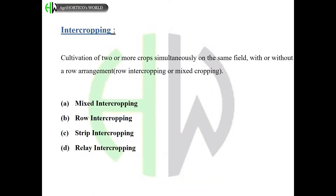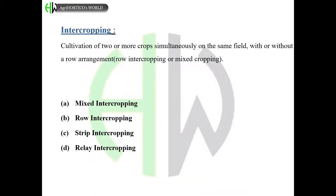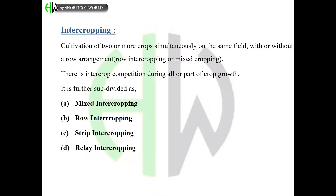Intercropping is the cultivation of two or more crops simultaneously on the same field with or without a row arrangement — row intercropping or mixed cropping. There is intercrop competition during all or part of crop growth. It is further subdivided as: mixed intercropping, row intercropping, strip intercropping, and relay intercropping.